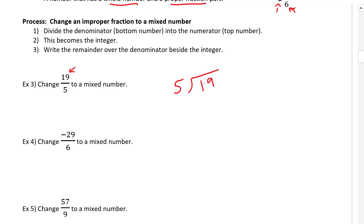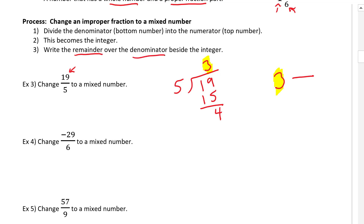Let's try example three: change 19 over five into a mixed number. Five divided into 19 — how many times does five go into 19? As a whole number, three times. Three times five is 15, we have four remaining. This becomes our new whole number, three. Then step three: write the remainder over the denominator. The denominator was five, that doesn't change, and our remainder is four. So 19 over five equals three and four-fifths.